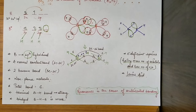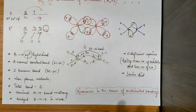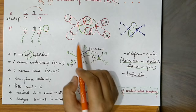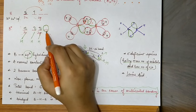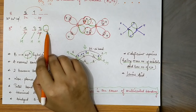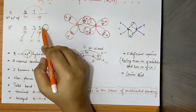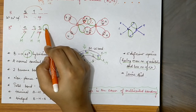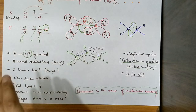Now the biggest question about diborane — its acidic character. Whether it is an acid or not. If we talk about BH3, it is 100% a Lewis acid because it has a deficiency of electrons. But now that delocalization has occurred in B2H6, does that change anything? The electrons are not completely donated to the orbital — they are just delocalizing.